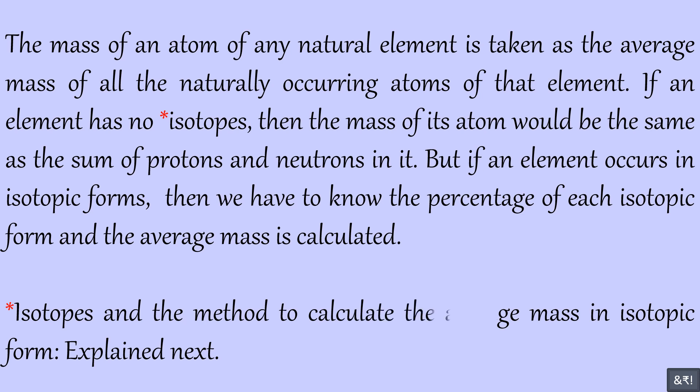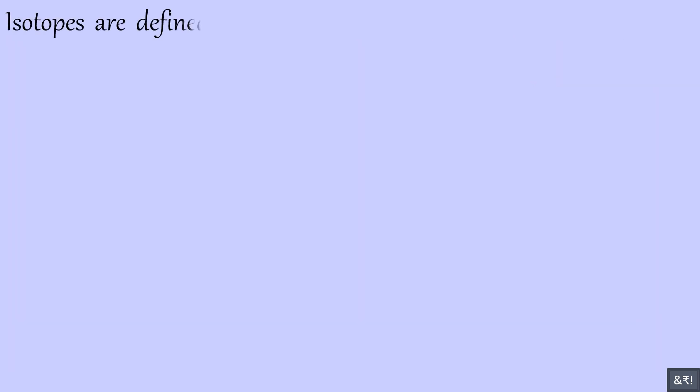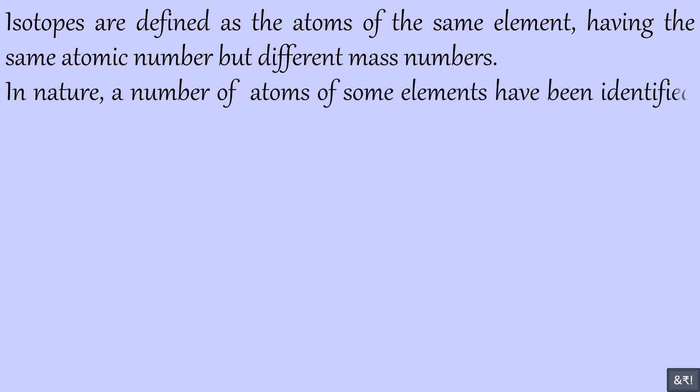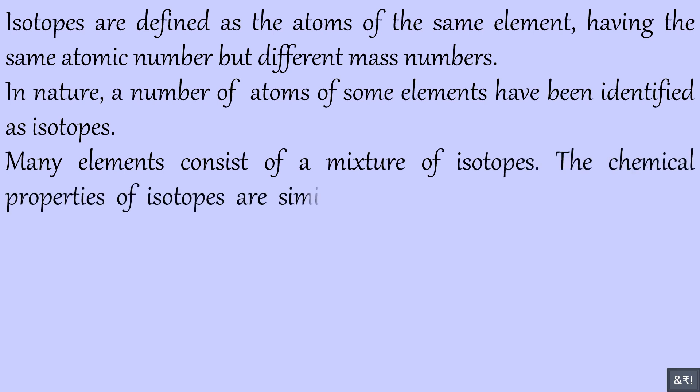Isotopes and the method to calculate the average mass an isotopic form explained next. Isotopes are defined as the atoms of the same element, having the same atomic number but different mass numbers. In nature, a number of atoms of some elements have been identified as isotopes. Many elements consist of a mixture of isotopes. The chemical properties of isotopes are similar but their physical properties are different.